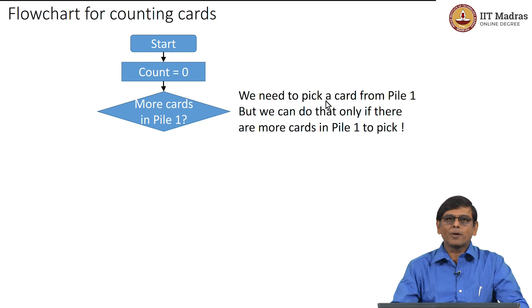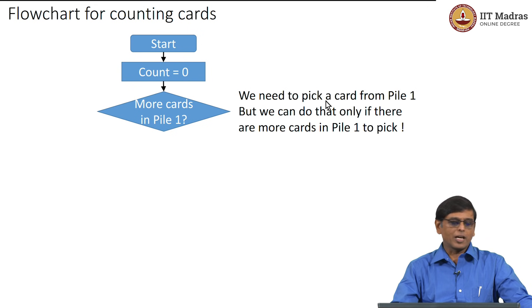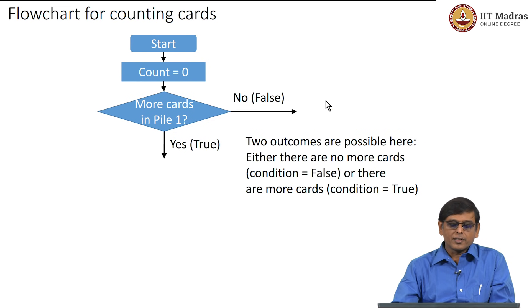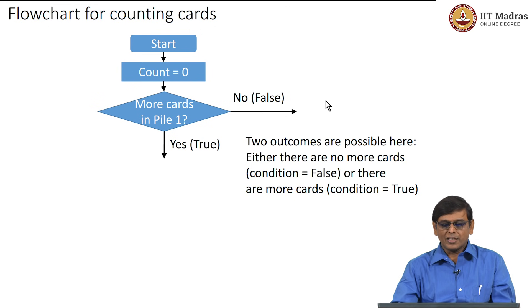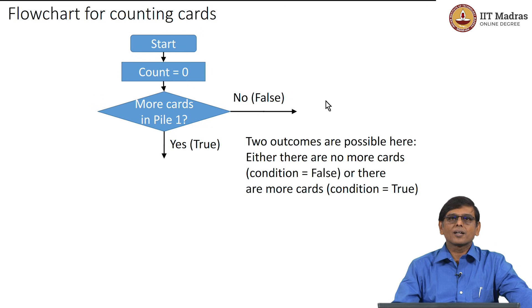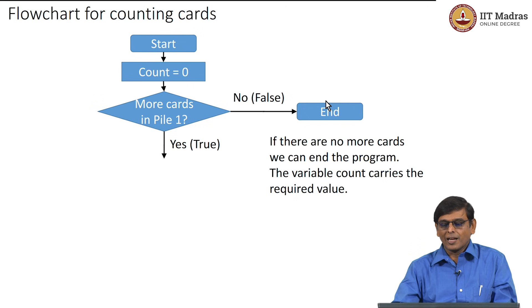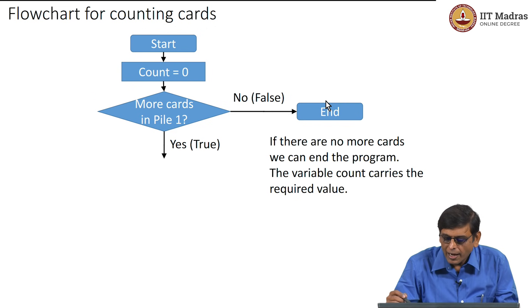Clearly if there are no more cards in pile 1 we stop, and if there are more cards we proceed to the iteration step — picking a card from pile 1. There are two possible outcomes: more cards in pile 1 means the condition is true, no more cards means it is false. If the condition is false — no more cards — we have nothing further to do, so we stop. The way to denote stop is to place the terminal symbol 'end', indicating we have ended the program.